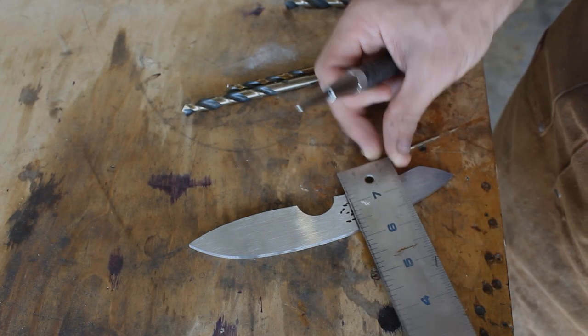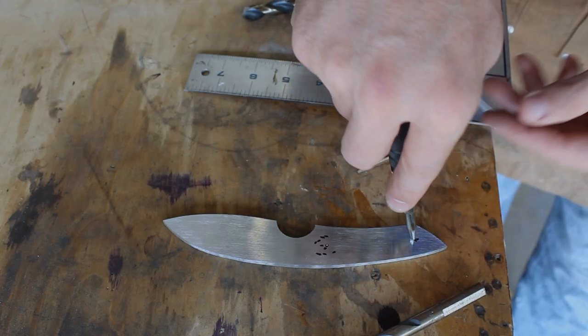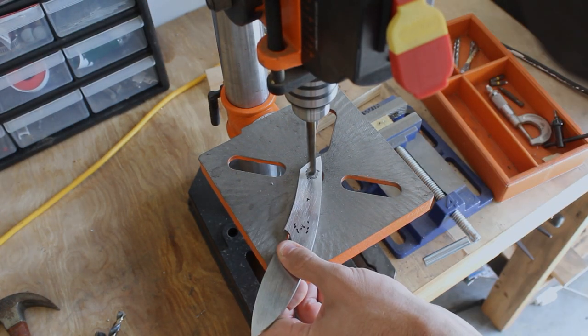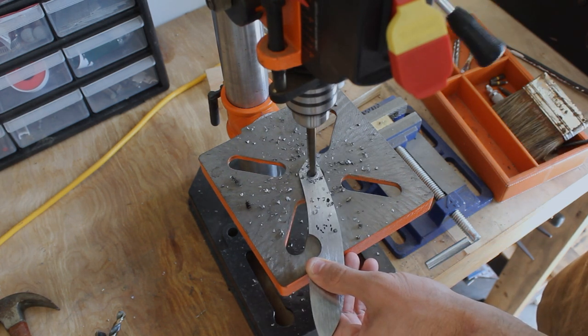Now I'm going to measure out and center punch the weight reduction holes. I'm actually going to do the two outside ones first because all three holes are going to be different sizes and I didn't want to screw up the layout, so I'll drill those two first and then I'll come back and measure to center from those two holes and drill the center hole.